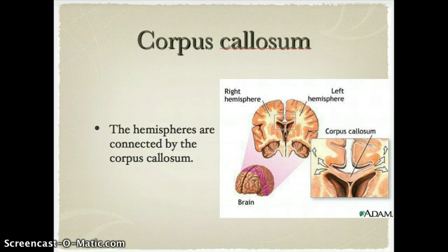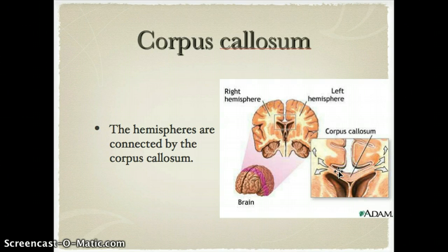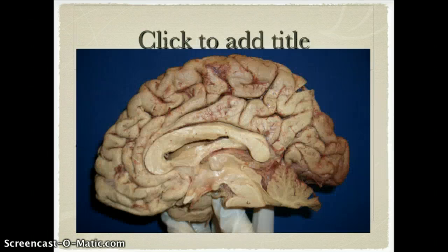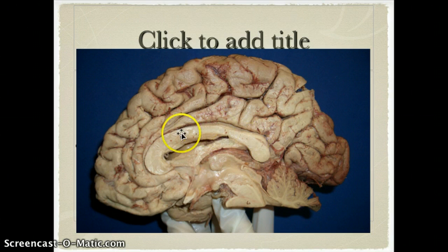The two hemispheres of the brain are connected by the corpus callosum. If we took a slice of the brain — do you see this pink strip here? — cutting here and opening up the brain, you can see this structure connecting the two hemispheres. This is called the corpus callosum, and it facilitates communication between the two hemispheres.